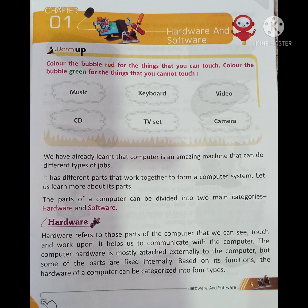Hardware refers to those parts of the computer that we can see, touch, and work upon. It helps us to communicate with the computer. The computer hardware is mostly attached externally to the computer, but some of the parts are fixed internally. Based on its functions, the hardware of a computer can be categorized into four types.